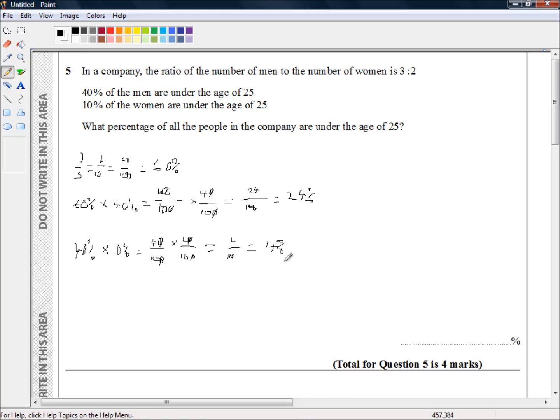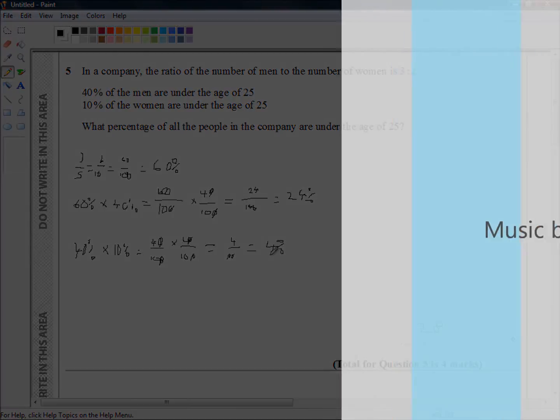Adding the two together, 24 plus 4 is 28%. So 28% of the entire workforce are under 25. I hope that was helpful, and I'll see you in the next video.